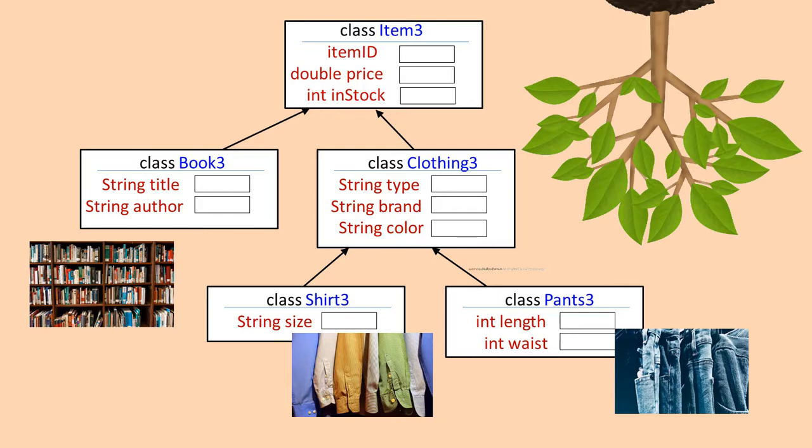Because book is derived from item, it actually includes item ID, price, in stock, title, author, and date. Shirt is derived from clothing, which is derived from item, so it includes item ID, price, in stock, type, brand, color, and size. The items for shirt and pants are unique — these two classes can inherit everything from class clothing and class item. They just need to include some member data of their own: size for shirt and length and waist for pants.